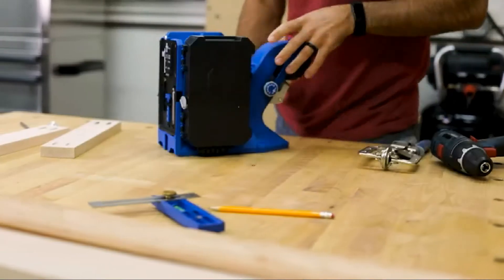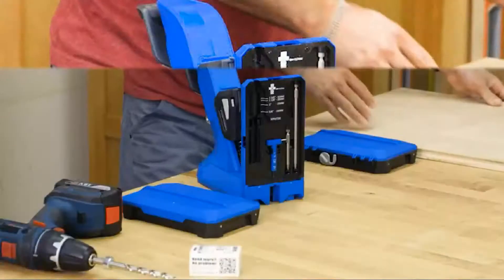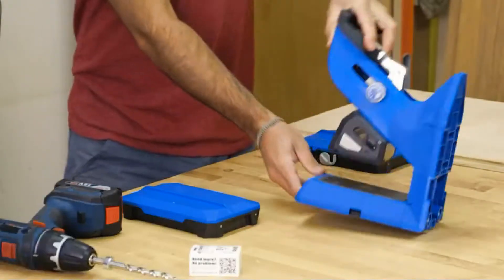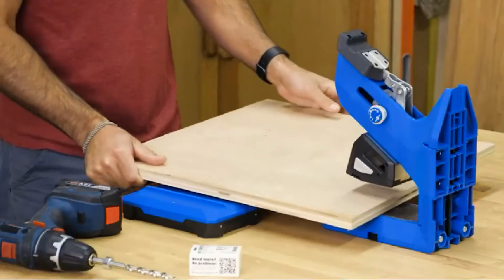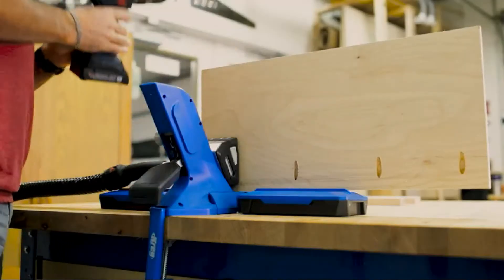The pocket hole jig 720 Pro looks like no pocket hole jig before and performs like no other too. That's because the Kreg pocket hole jig 720 Pro is equipped with exclusive auto-max one motion clamping.